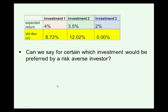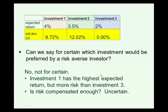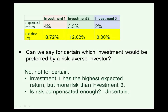The first question: can we say for certain which investment would be preferred by a risk-averse investor? Investment one has the highest expected return but also a higher standard deviation than investment three. So looking at investments one and three — while investment one promises a higher expected return, that return is uncertain; investment three has a lower return but no risk. The answer is no — we can't pick out the one that all risk-averse investors would definitely want. Some risk-averse investors will take investment one saying the risk is compensated; other, more cautious investors might say that extra expected return isn't worth the risk and stick with investment three.